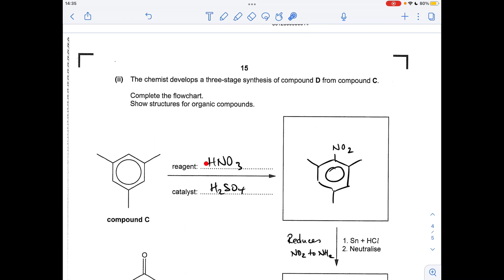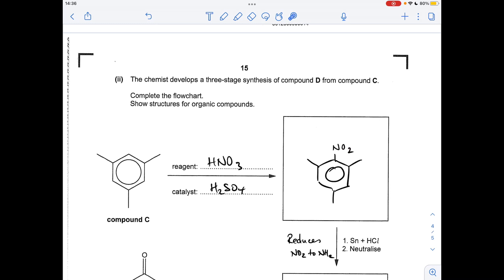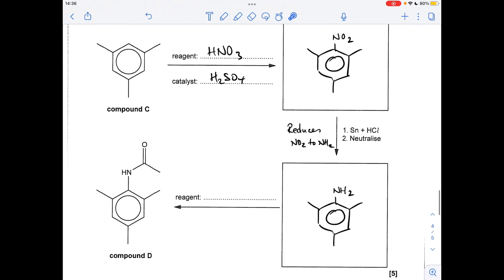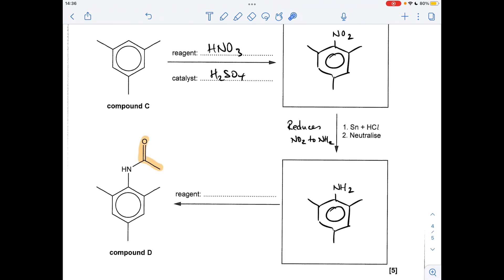Technically these acids are both concentrated but that's not required in the mark scheme. And then to follow on from what I was saying at the start, we're reducing this NO2 group to an NH2 group, so that's what goes in that box there. And then the final reaction, you'll see I've highlighted this group here, so we basically need to take one of these hydrogens off and put a CH3 C double bond O group on. The way we do that is we can either react this with ethanol chloride or with ethanolic anhydride, they both contain that group there.